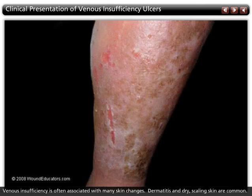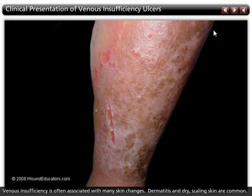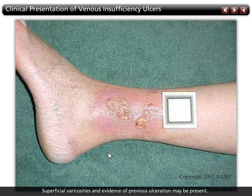Venous insufficiency is often associated with many skin changes. Cellulitis, dermatitis, and dry scaling skin, which may cause intense itching, are common. Superficial varicosities and evidence of previous ulceration may also be present.